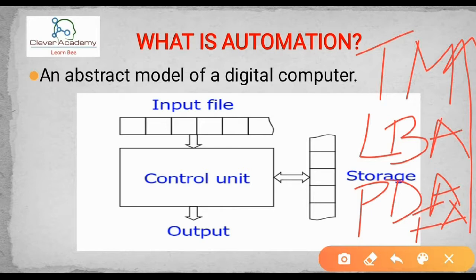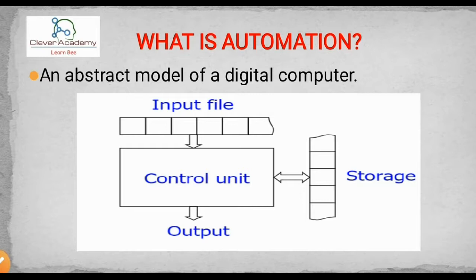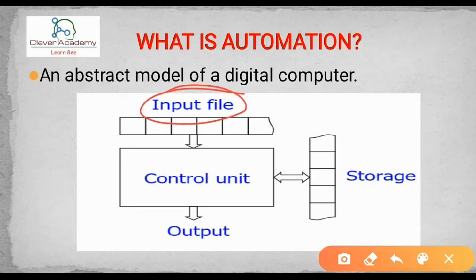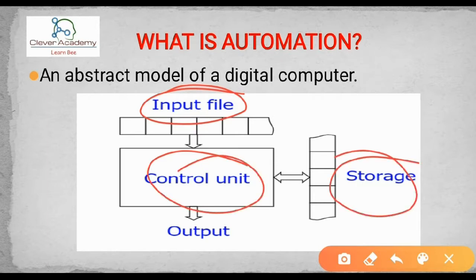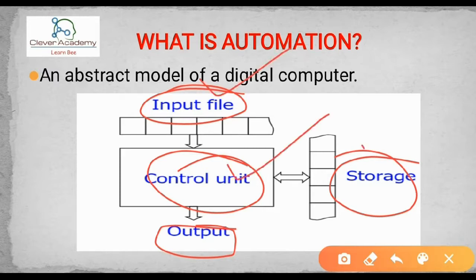When coming to the automation, the general definition of an automation is an abstract model of a digital computer. So when coming to the digital computer, you can have the simple representation: you will have an input file, a control unit, and then we are having the storage — mainly these three things — and from that we are going to be getting the output.